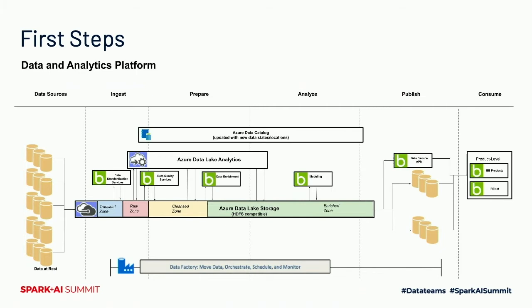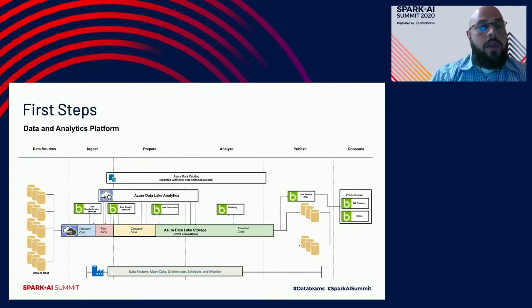This is what our initial architecture looked like. The data would flow in from our various data sources into Azure Data Lake storage and move from an initial transient zone by data standardization services to the raw zone. From there, the data would be moved by data quality services to a clean zone. Finally, data enrichment and modeling services would further enhance data in the enriched zone. The enriched data would be fronted by a data services API or delivered to additional databases to be consumed by our products.